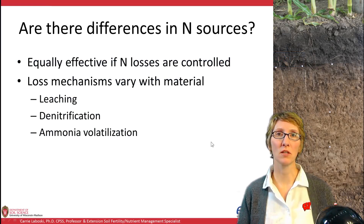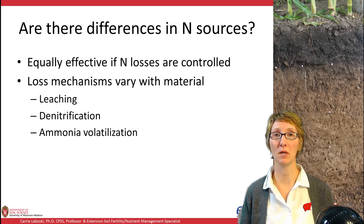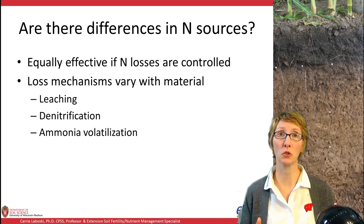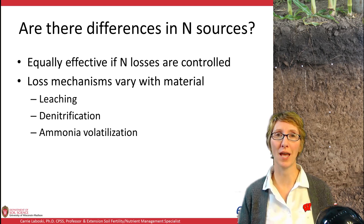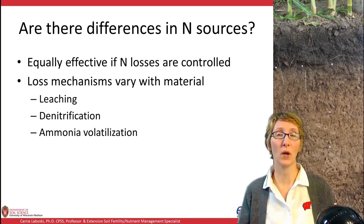I am often asked whether there are differences in nitrogen sources. There are different loss mechanisms for each material. Some are more prone to leaching; others are more prone to denitrification if there's a lot of nitrate in them; and ammonia volatilization applies to urea materials. Essentially, if we can control nitrogen losses and do a really good job of application, they should be relatively comparable to each other. It really is more an issue with application method and our ability to control those loss mechanisms.